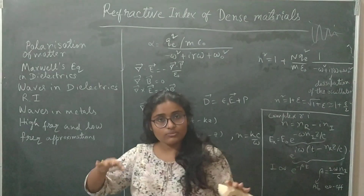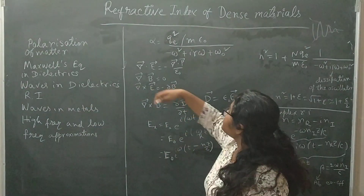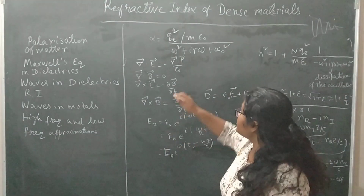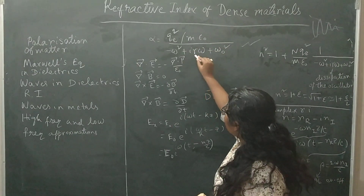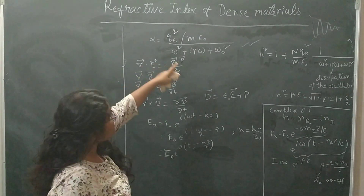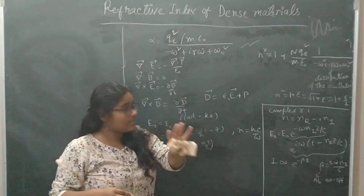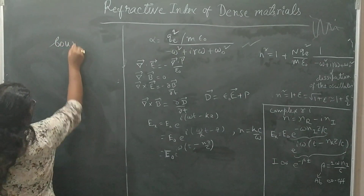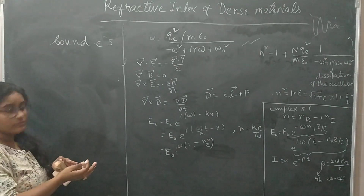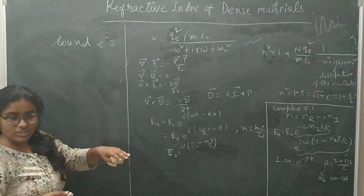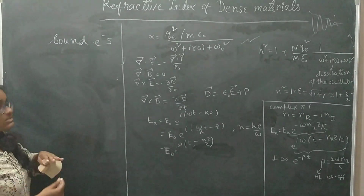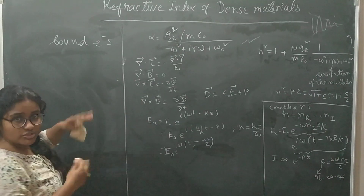Now I will explain what we truly mean by refractive index. Before that, last time I described the polarizability tensor. For a dielectric material, there are bound electrons. Bound electrons mean dipoles — whenever I apply an electric field, the dipoles will be generated, generating polarization, from which I get the dielectric constant and the refractive index. So basically, polarizability arises due to electronic polarizability, due to the oscillation of the electrons.